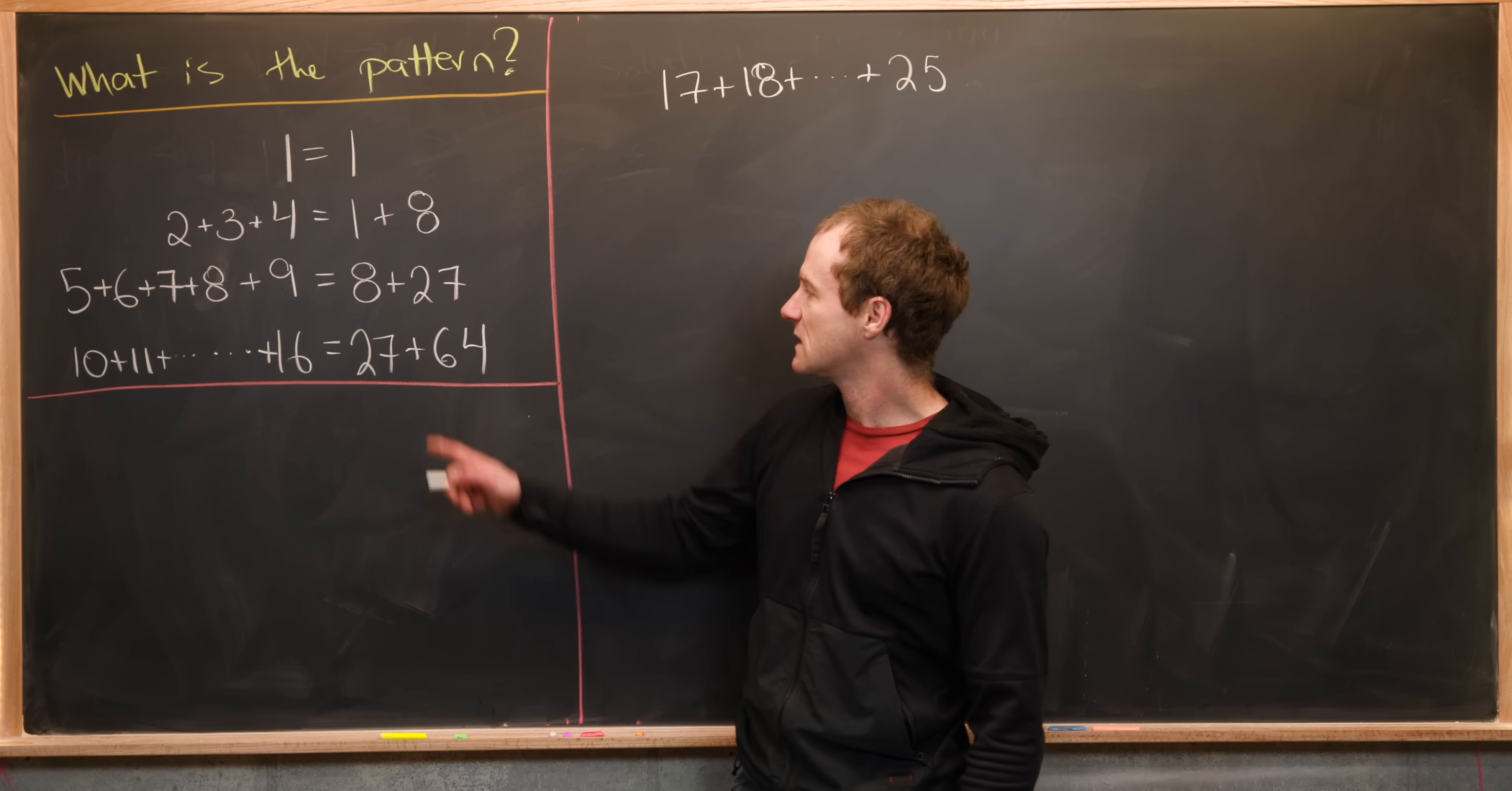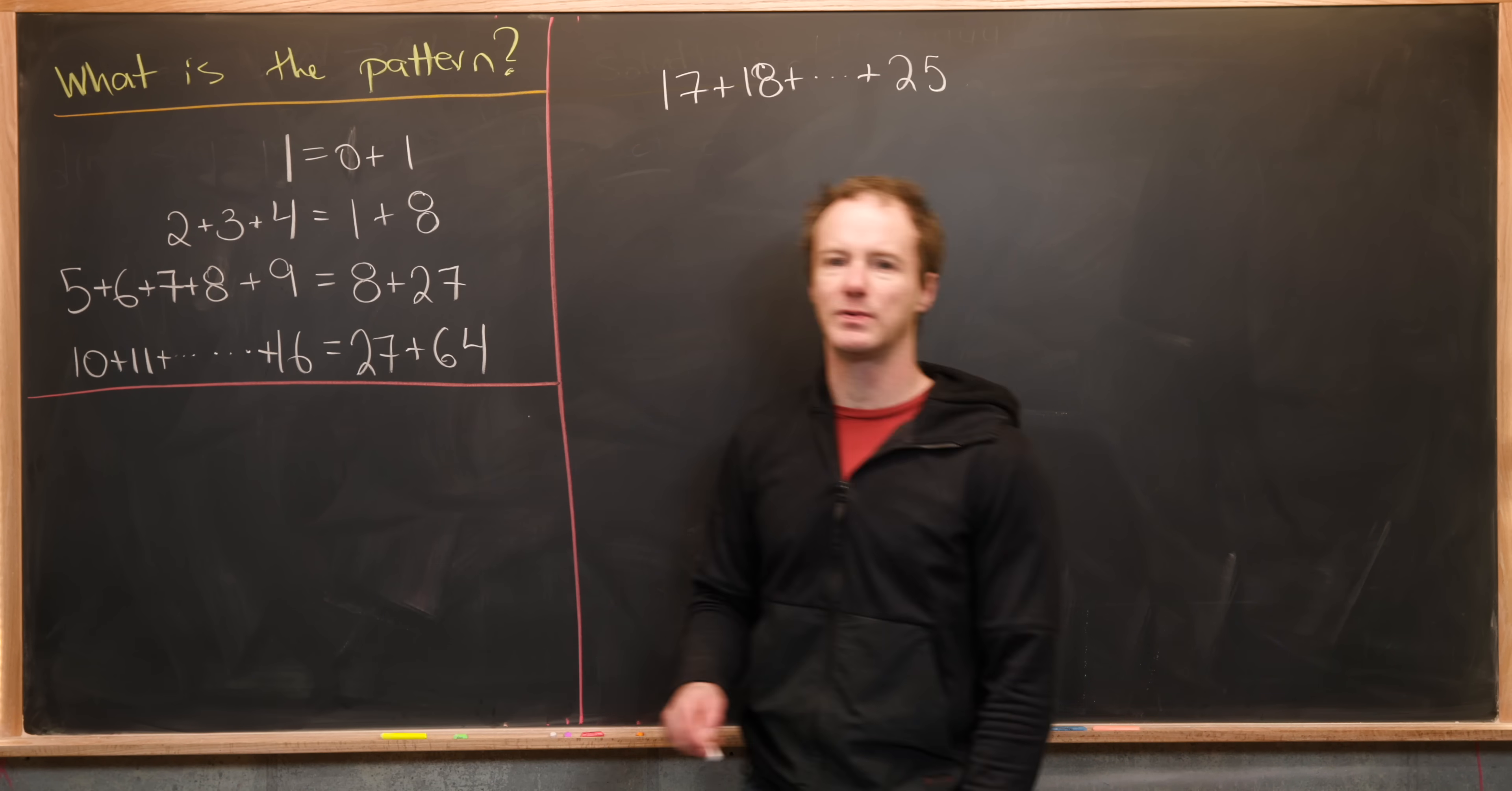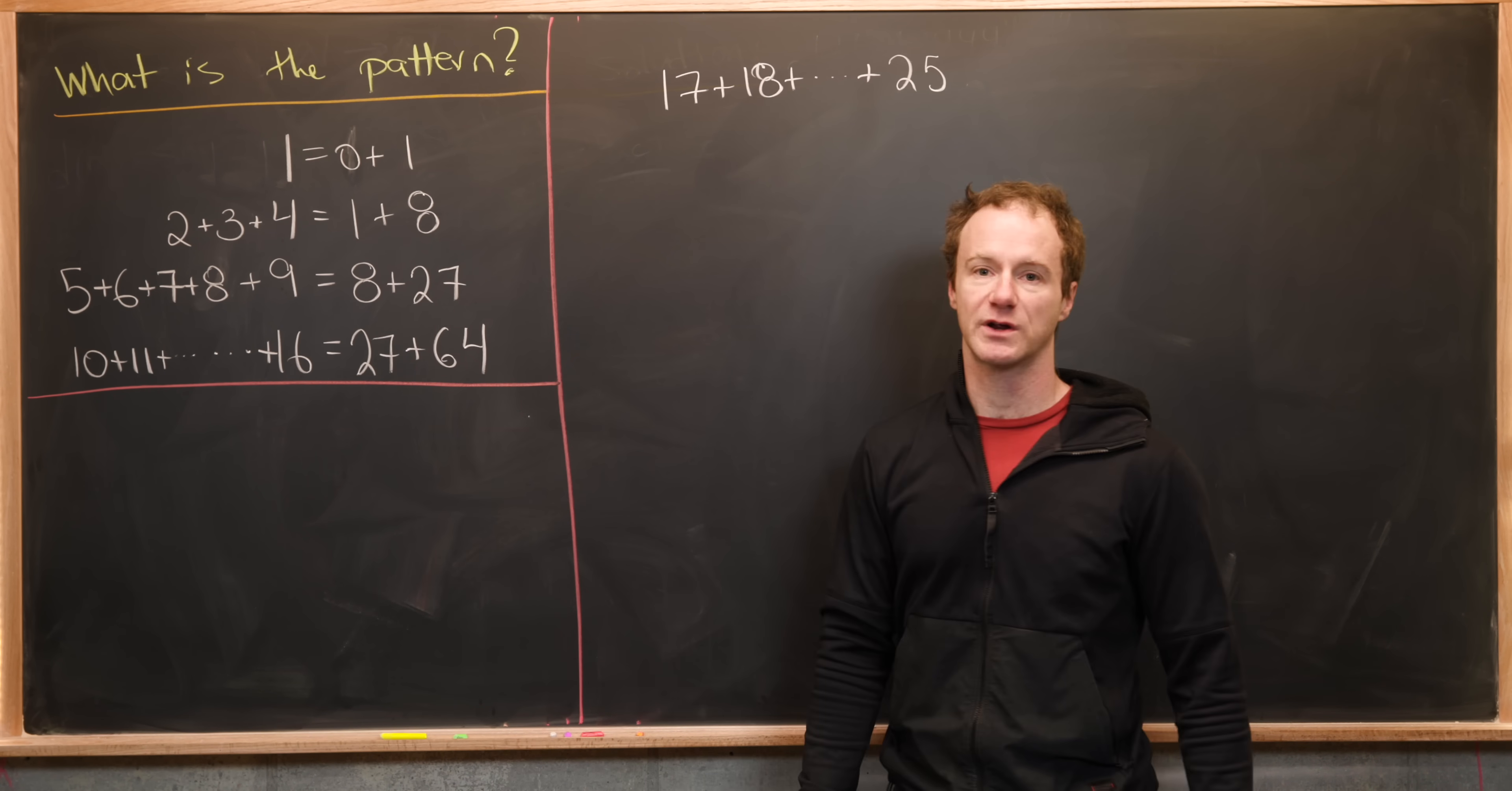Okay, now let's see what we've got over here. So if we take this 1 and rewrite it as 0 plus 1, maybe that'll help a little bit. Because notice this is 0 cubed plus 1 cubed. This is 1 cubed plus 2 cubed. 2 cubed plus 3 cubed. 3 cubed plus 4 cubed.